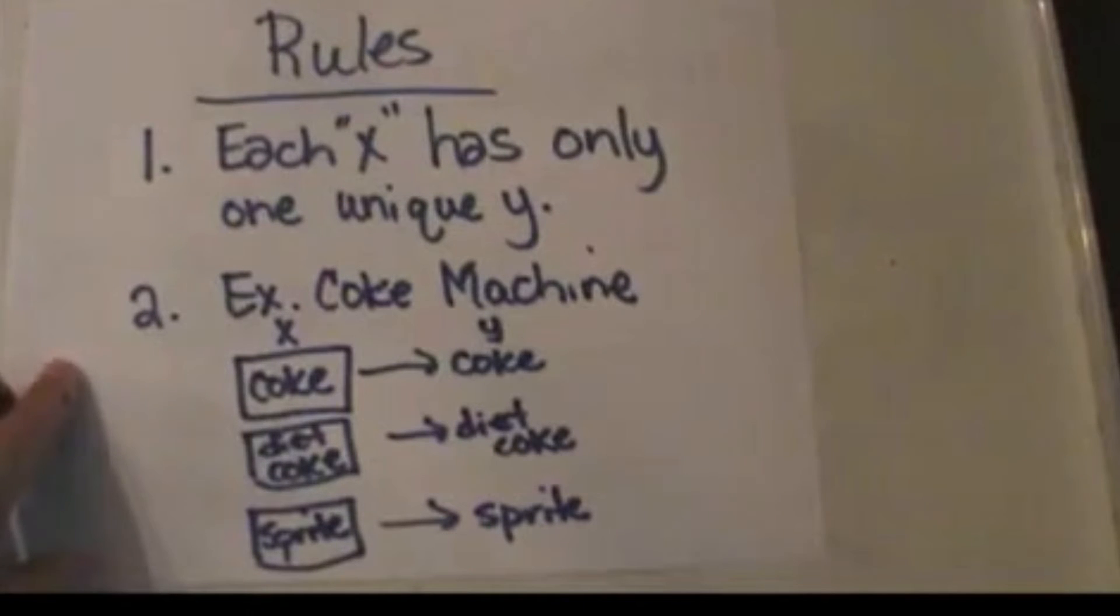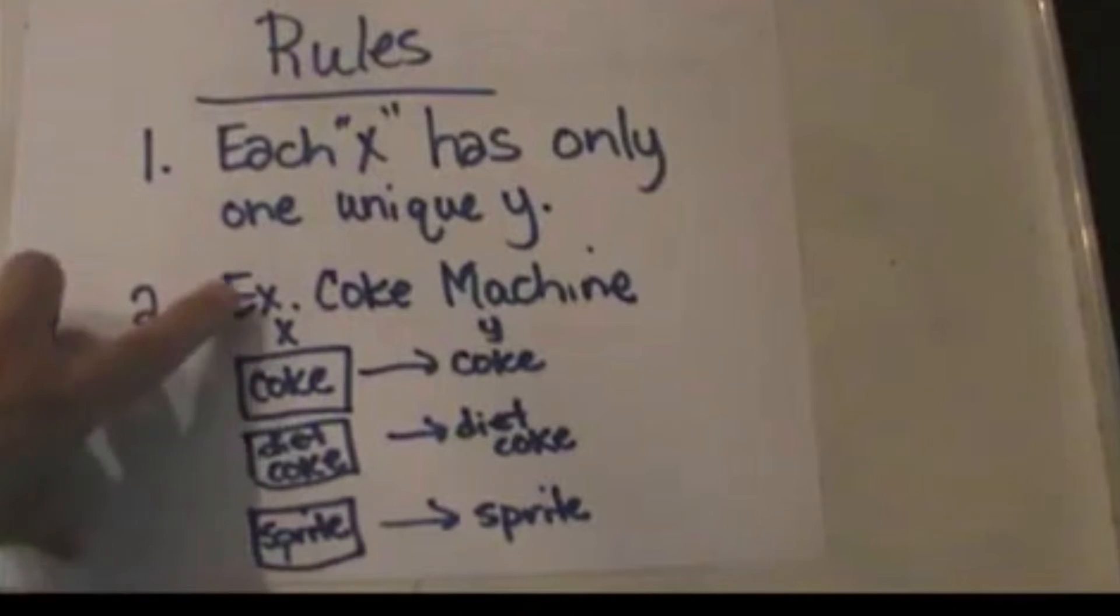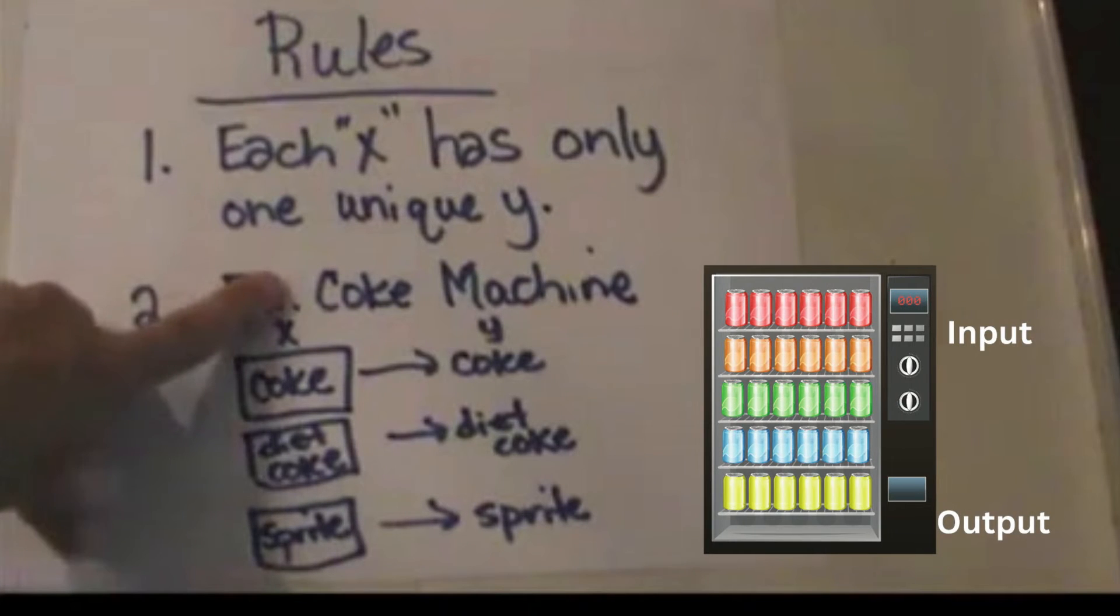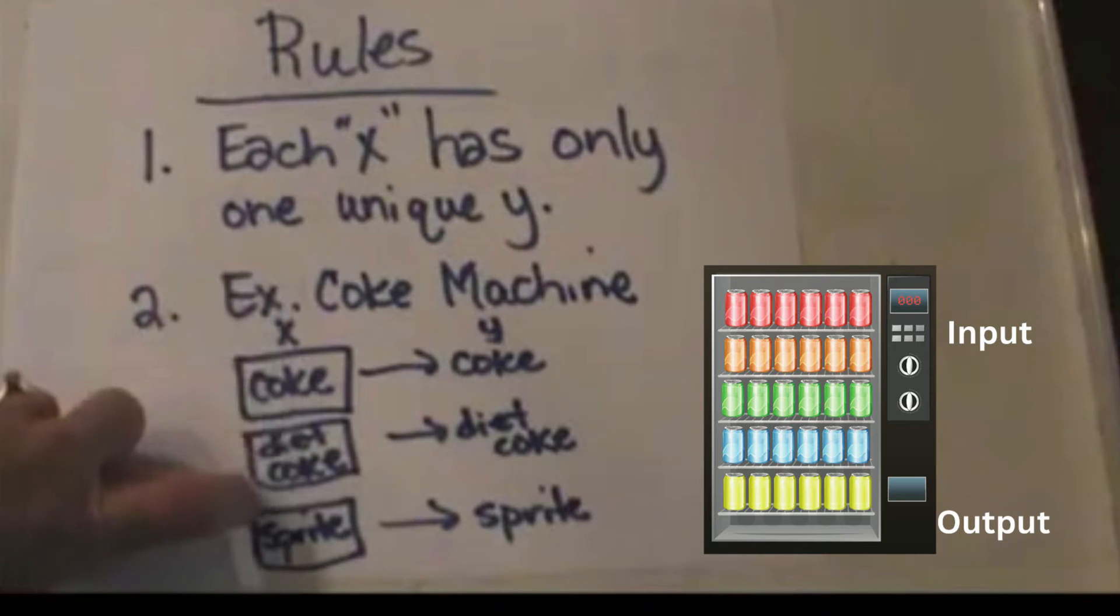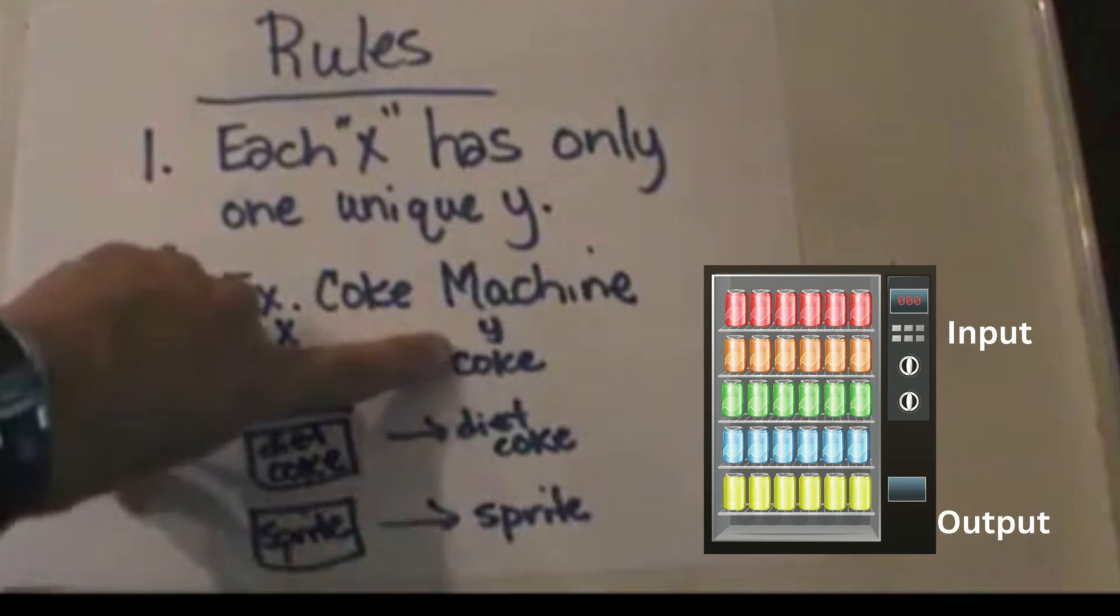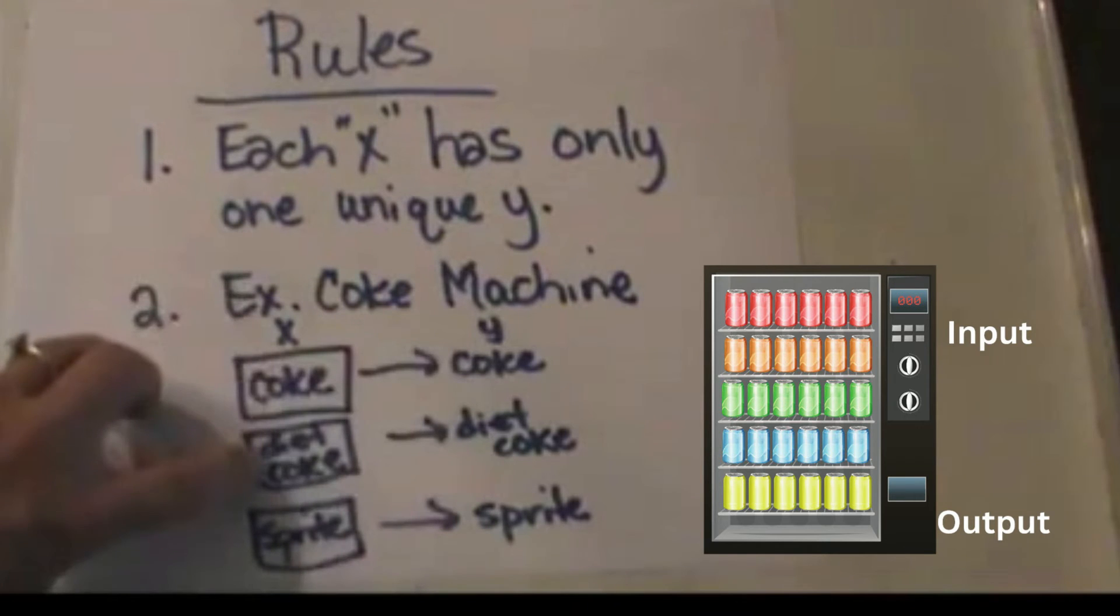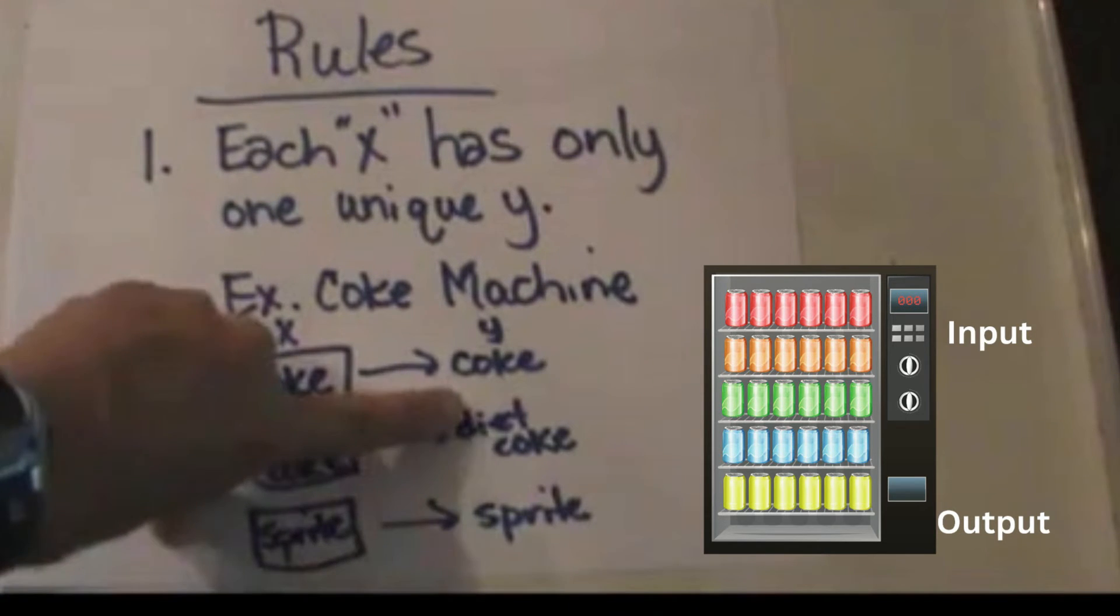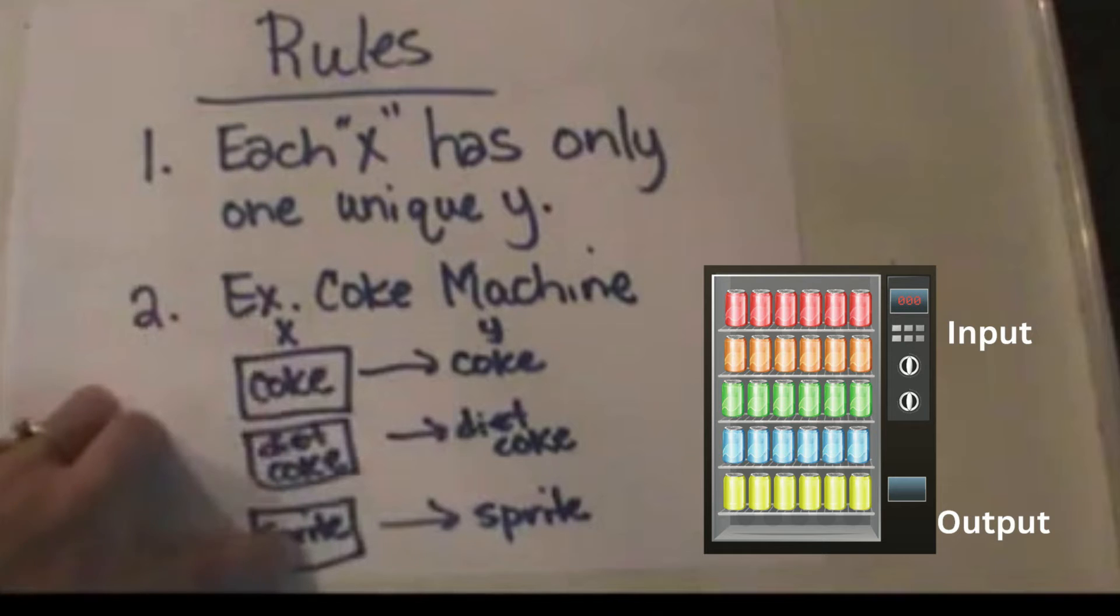so I have an analogy to share with you. Think about a coke machine. The x values are like the buttons on the front of the machine. If you press the coke button, you'll get a coke out. If you press the diet coke button, you'll get a diet coke out. And if you press the sprite button, you'll get a sprite out.